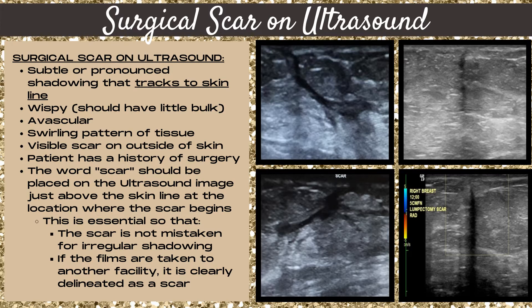There should be a visible scar on the outside of the skin and the patient should have a history of surgery. The word 'scar' should be placed on the ultrasound image just above the skin line at the location where the scar begins. This is essential so the scar is not mistaken for an area of irregular shadowing, and if films are taken to another facility, the outside facility clearly delineates that area as a scar and does not mistake it for a mass.